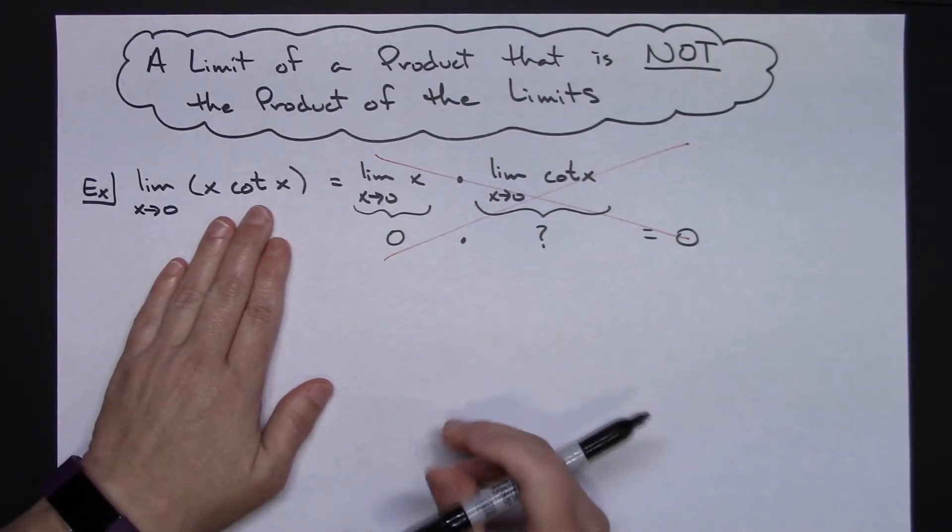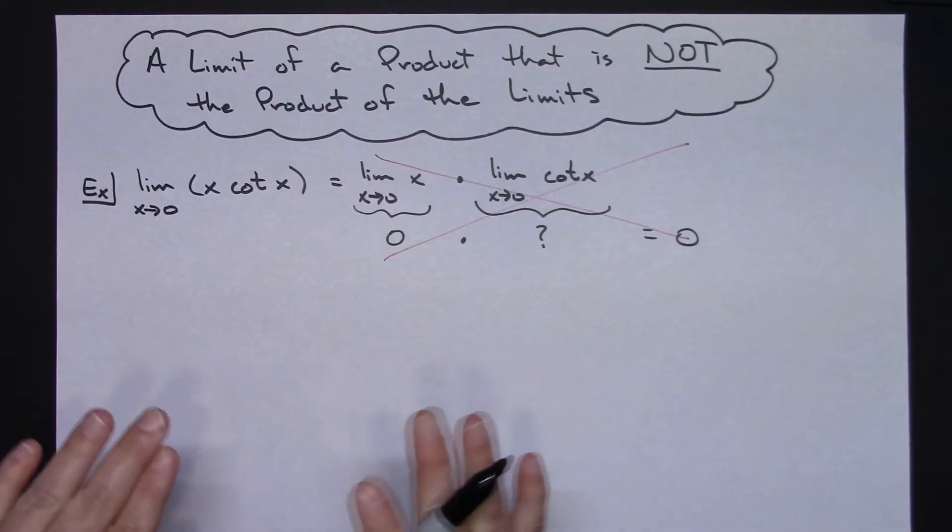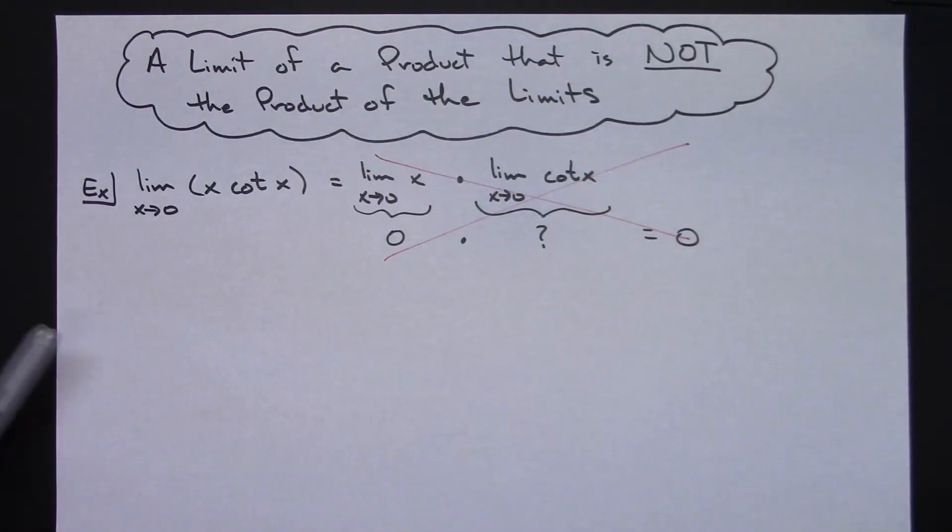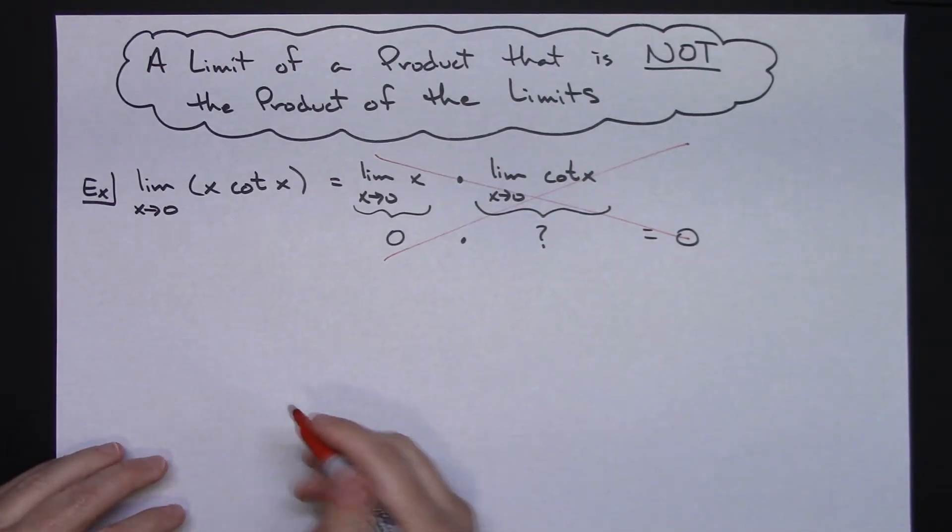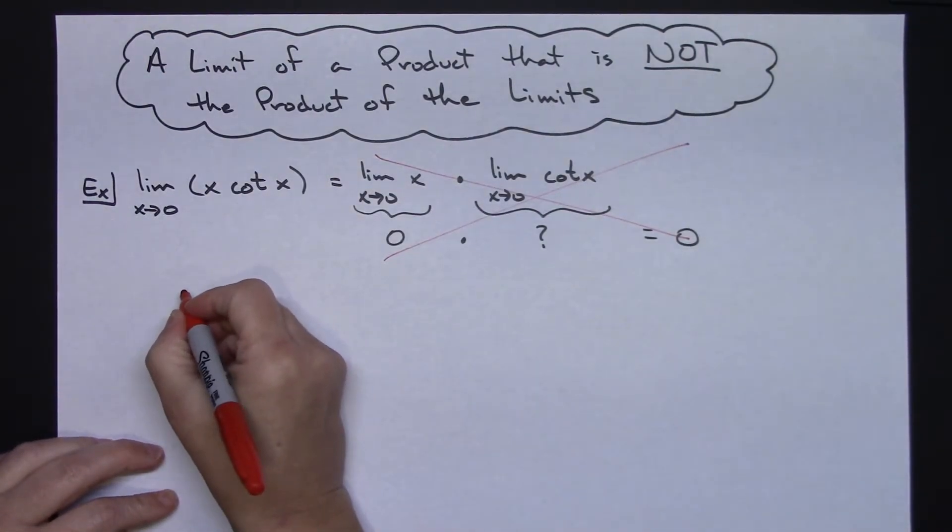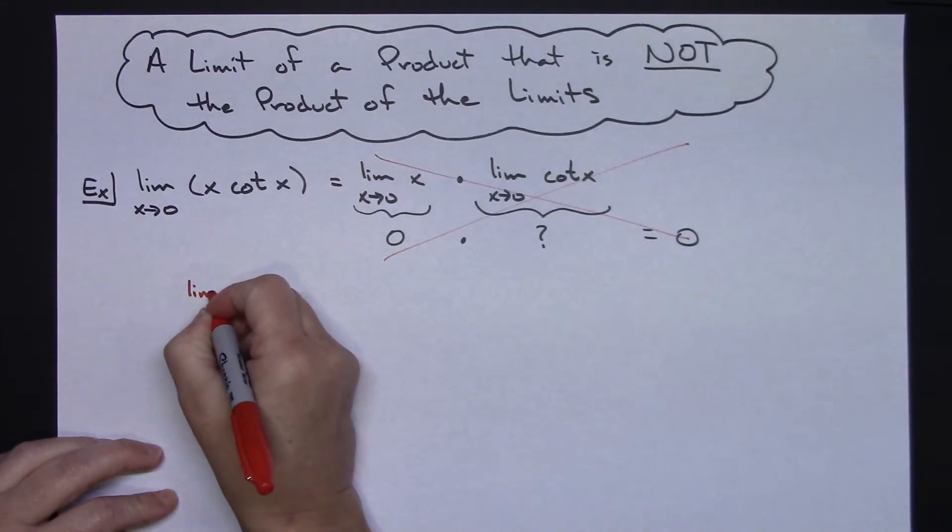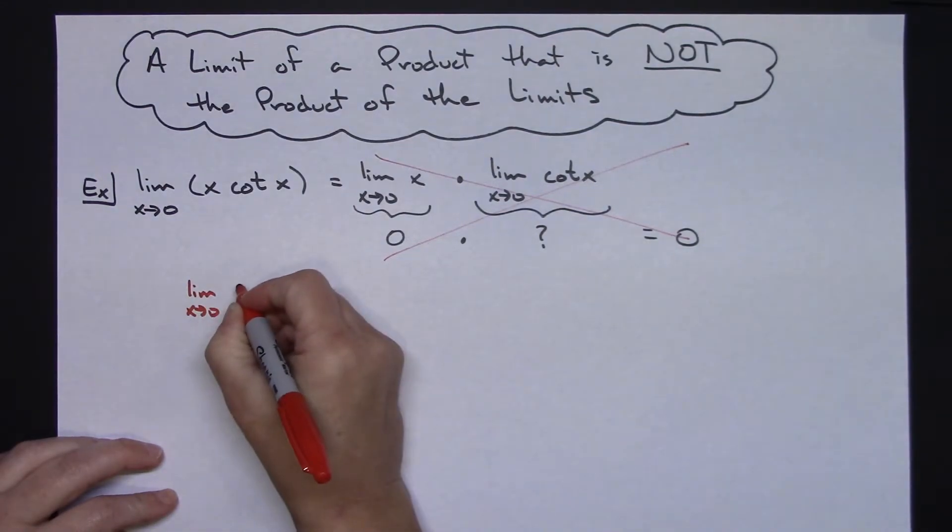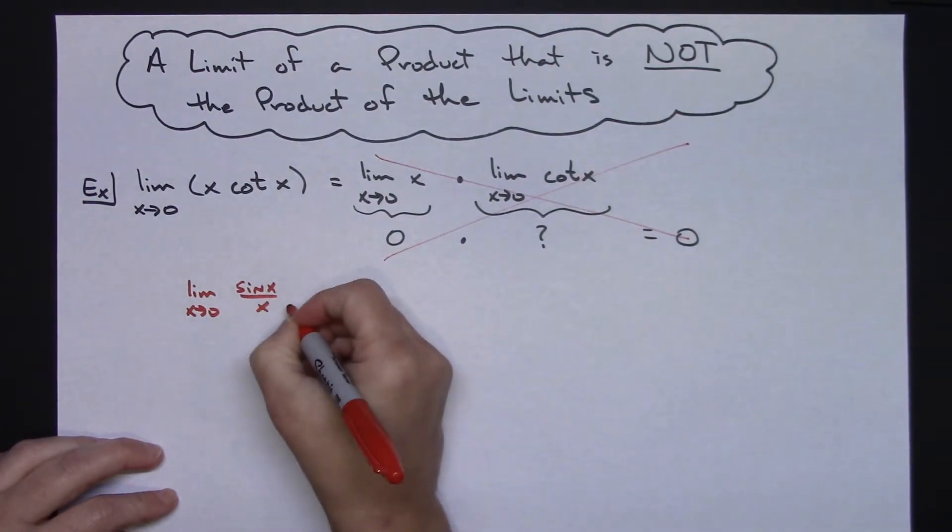Since cotangent is trig there, we're going to do some little trig manipulations. Now before I go any farther, I am going to comment in your textbook, you're going to see the limit as x approaches 0 of sine x over x equals 1.